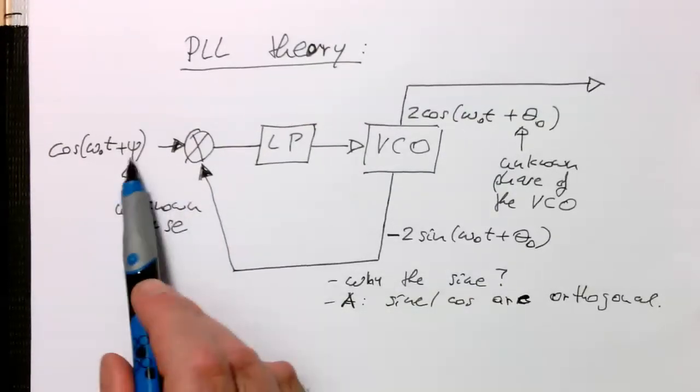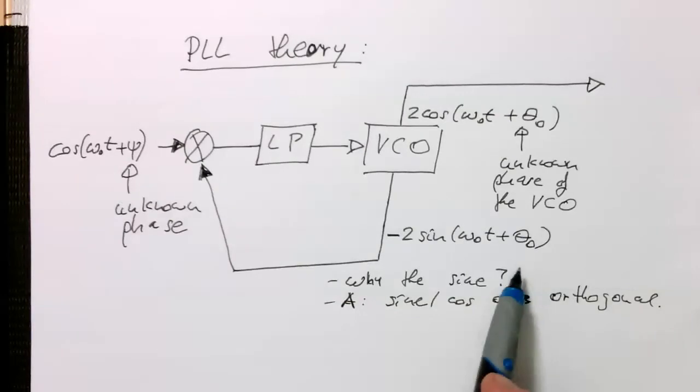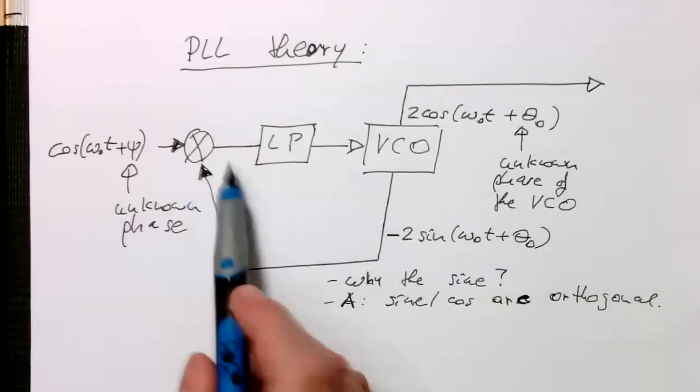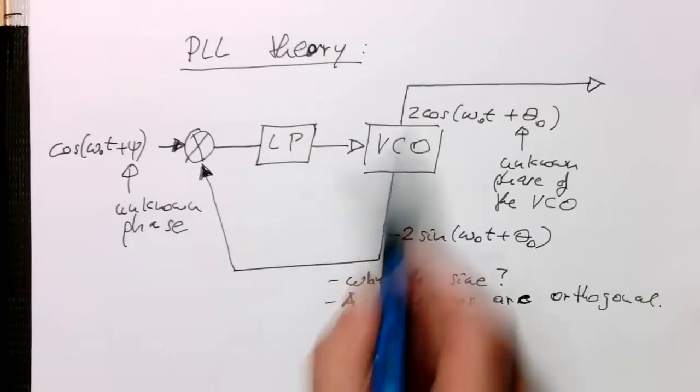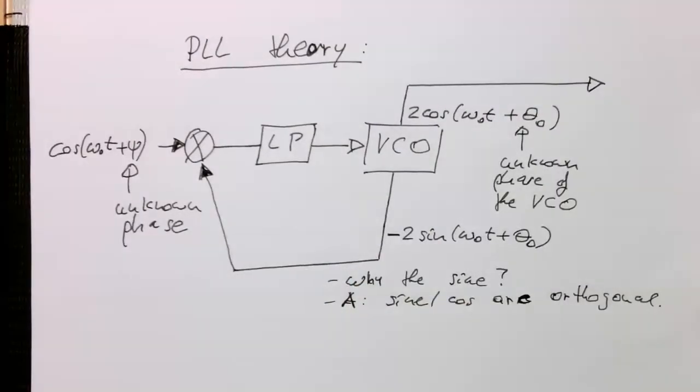so if theta and phi are the same phase, then this output here will be zero. And therefore the output will be identical here. So I'm going to derive this now a bit more mathematically.